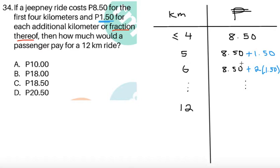If it's 5 kilometers, I'll be paying 8.50 plus 1.50. If I travel 6 kilometers, it's 8.50 plus 2 times 1.50. So we add the number of times or number of kilometers it's greater than 4. So 5 is greater than 4 by 1 kilometer, so we multiply it by 1 times 1.50. For 6, it's 2 kilometers greater than 4, so we're going to have 2 times 1.50.